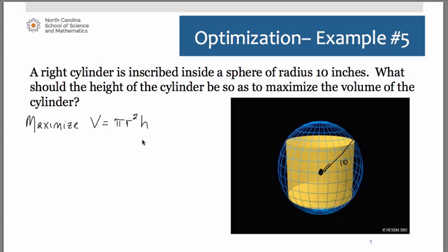Of course the problem is we have two different variables, we have an r and we have an h. We're going to have to get this down to one variable somehow, and this is where you need to be a little creative and clever. Remember that we were told the radius of the sphere was 10 inches.